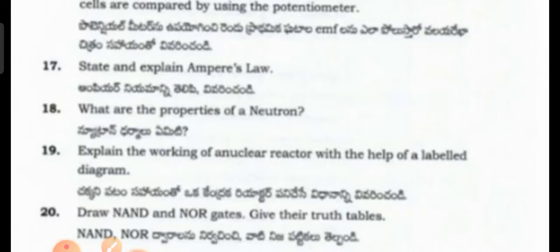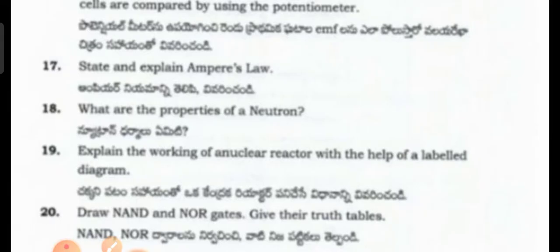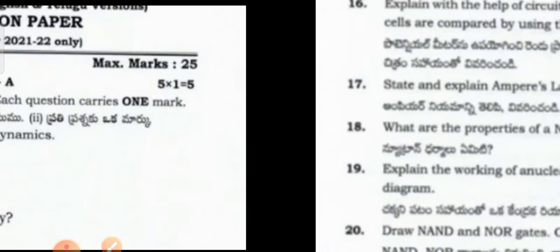State and explain Ampere's law. What are the properties of a neutron? Explain the working of a nuclear reactor with the help of a labelled diagram. Draw AND, NOR gates and give their truth tables.